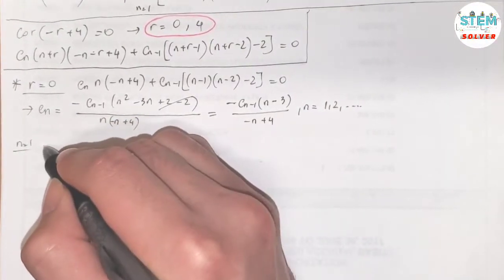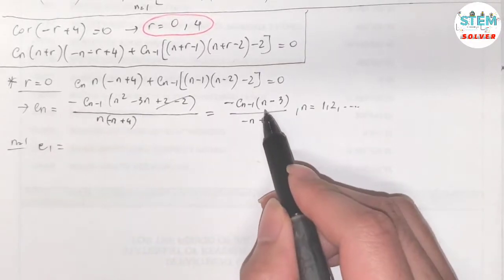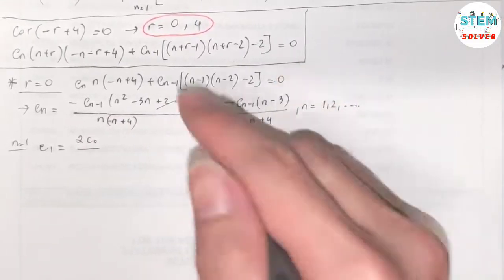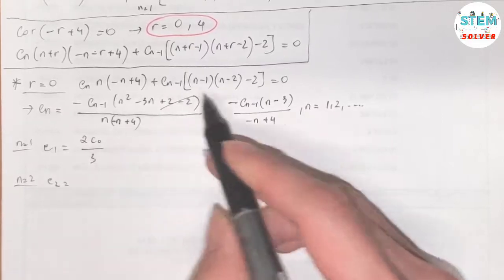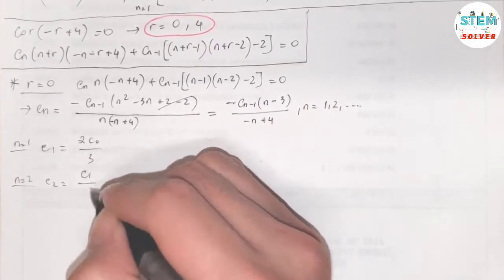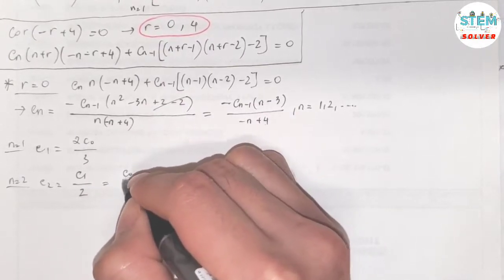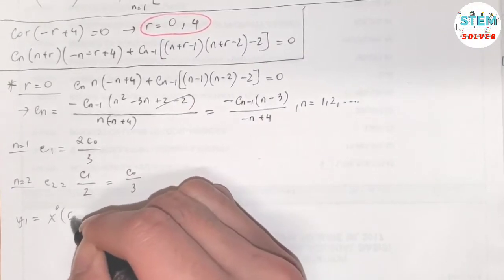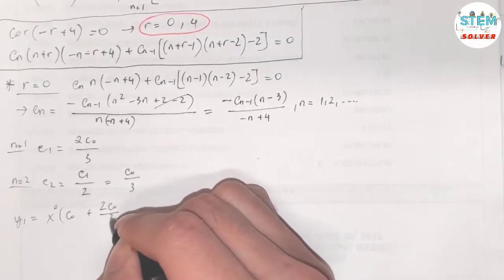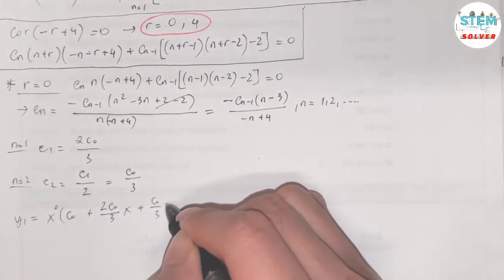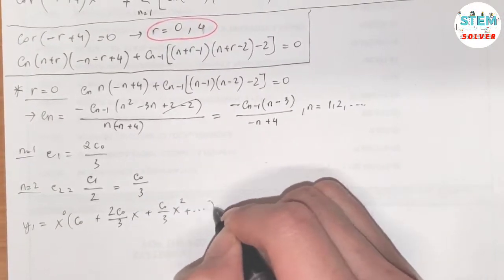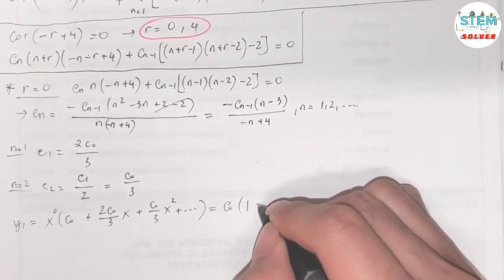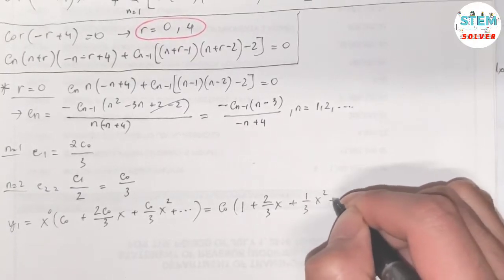When n equals 1: c_1 equals (1 minus 3)/(negative 1 plus 4) times c_0, giving c_1 equals 2c_0 over 3. When n equals 2: c_2 equals c_1 over 2, which substituting c_1 gives c_0 over 3. So y_1 equals x to the r (which is 0) times (c_0 plus c_1 x plus c_2 x squared plus …), giving c_0 times (1 plus (2/3)x plus (1/3)x squared plus …).